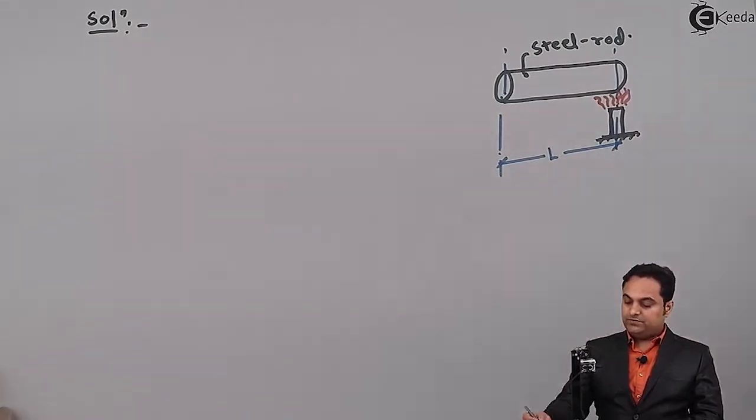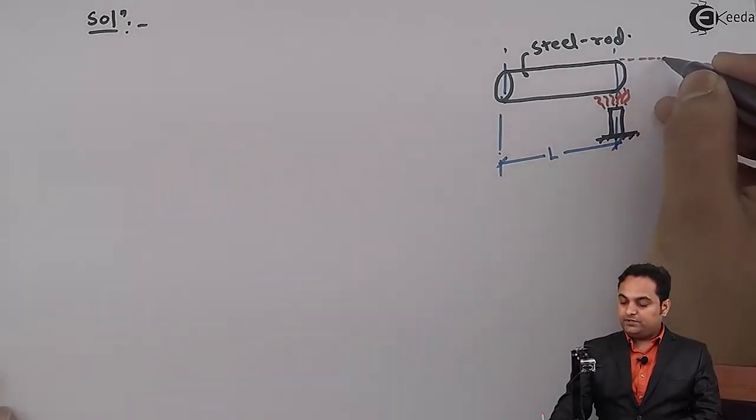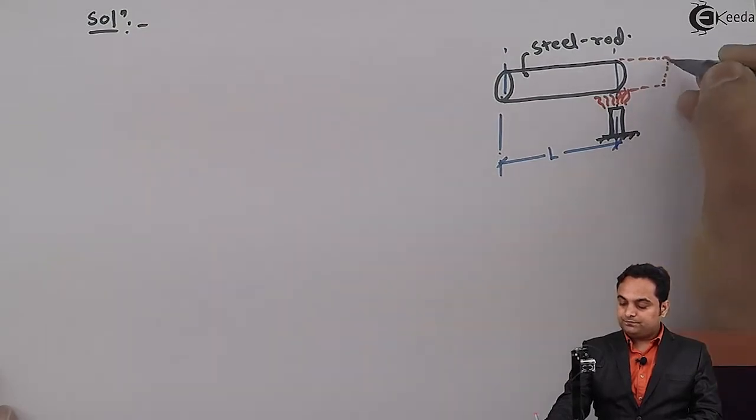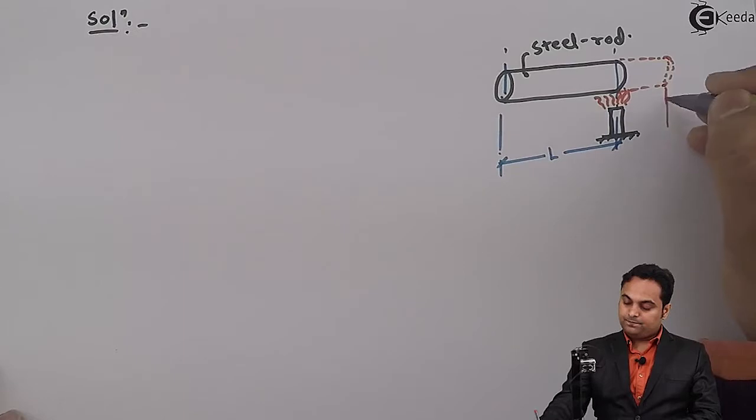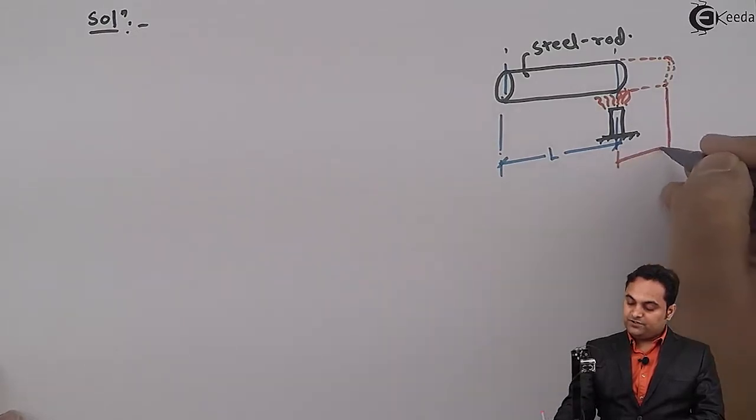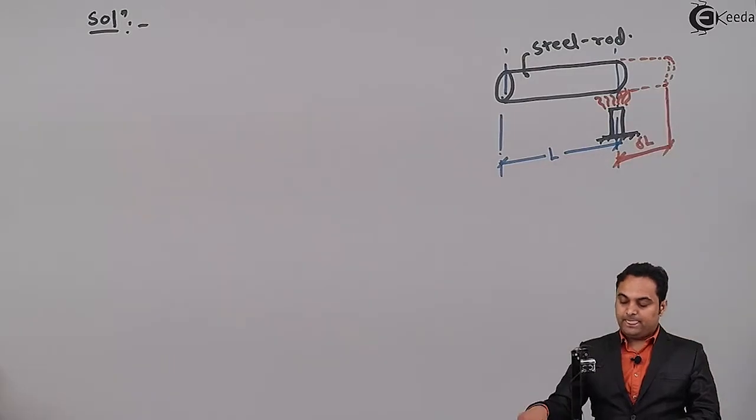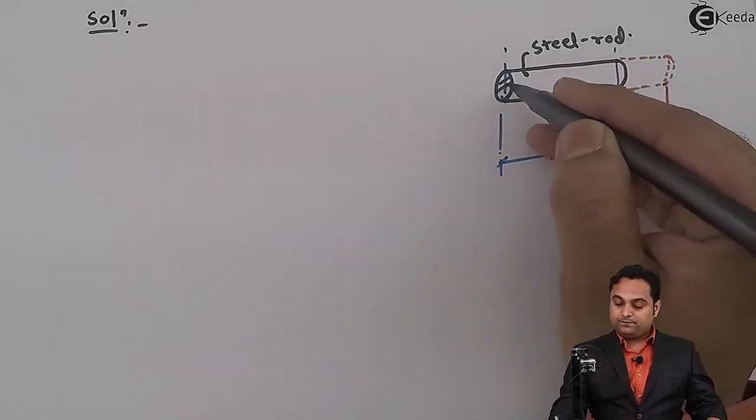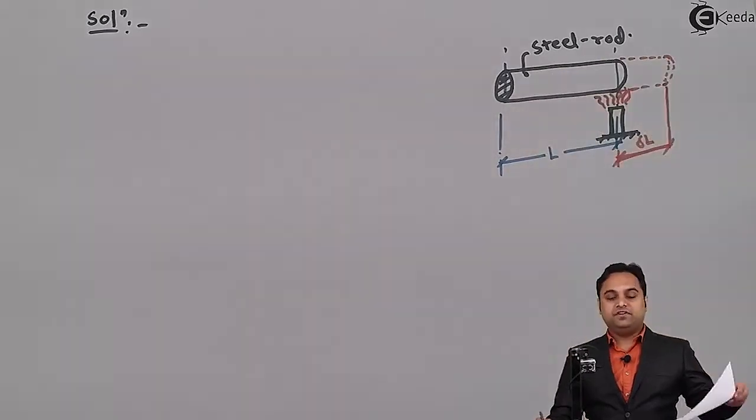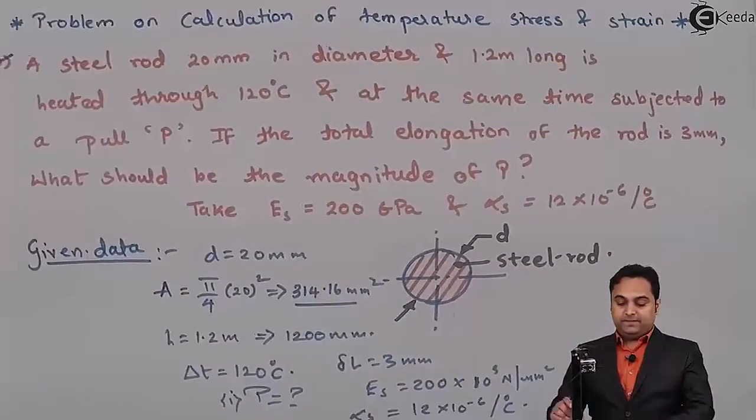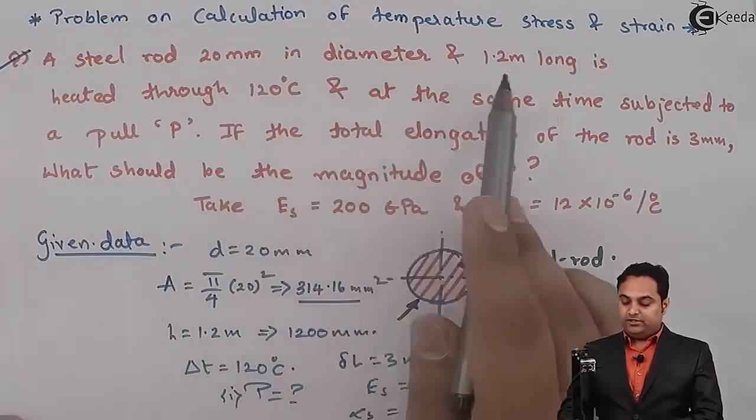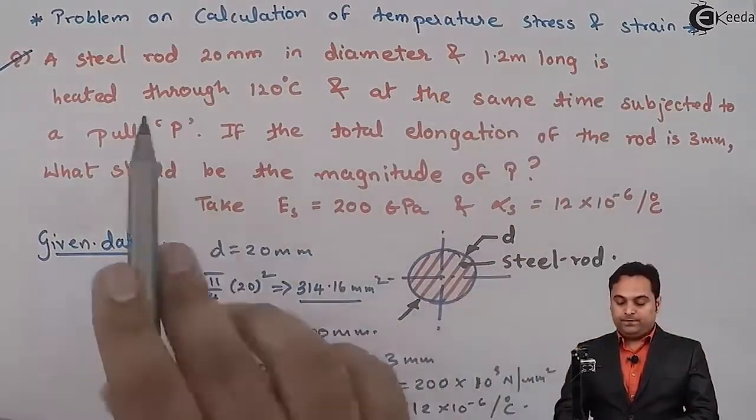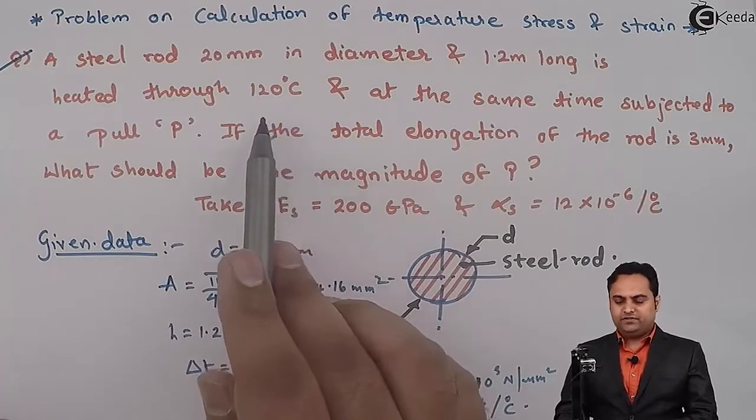It is heated to 120 degree Celsius. So here I will draw the diagram indicating the heat which is given to this steel rod. So when the steel rod is being heated, it will expand. And this is the free expansion. Free expansion of the steel rod denoted by delta L.